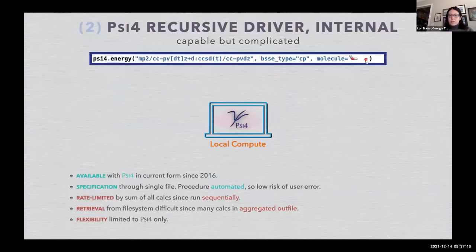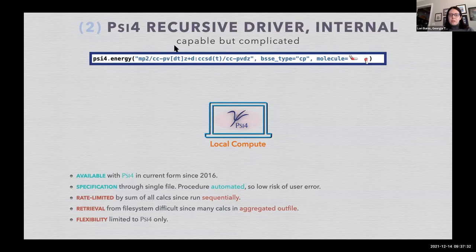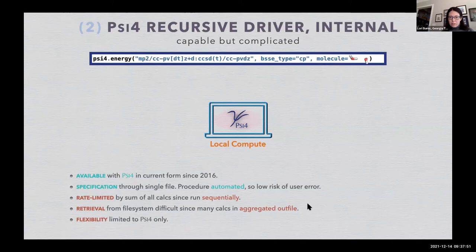This is the second way to run this type of calculation. It's been available since 2016. It's all specified through one file, so the procedure is automated with low risk of error. Specify MP2, specify the extrapolation, specify the delta procedure, specify that you run a basis set correction and you have the answer. However, all of these are going to be run sequentially, then you're going to get one big aggregated output file, and you can only run it in Psi4.